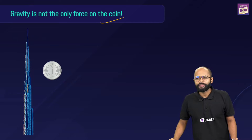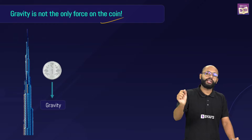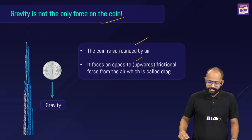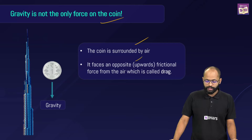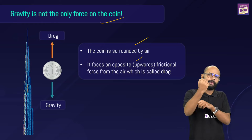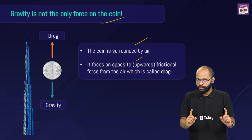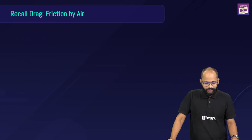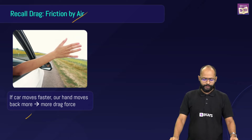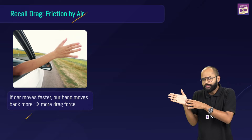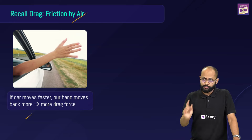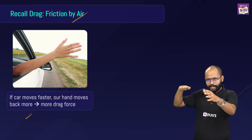Gravity is not the only force on the coin. The one small part we are missing is the air — the atmosphere between the coin and the ground. The coin is surrounded by air and faces an upward frictional force from the air called drag. When anything falls, air pushes it back — that is what we call the drag force, the frictional force of air.